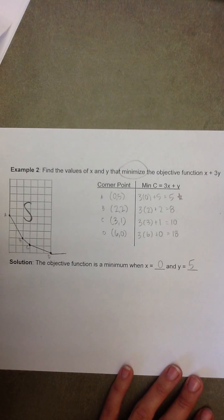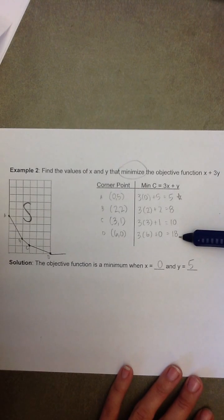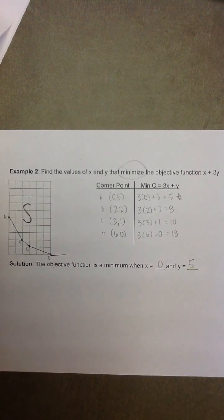If this were a maximization problem, we were looking for the maximum value of the objective function. In this case, it would be 18 when x equals 6 and y equals 0.